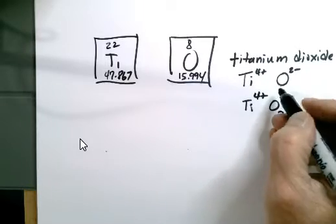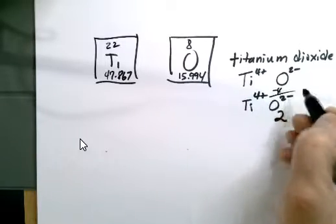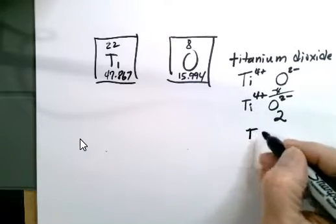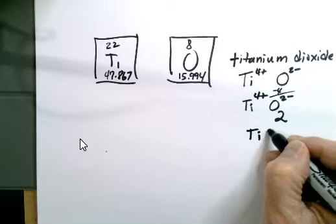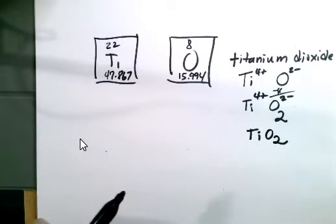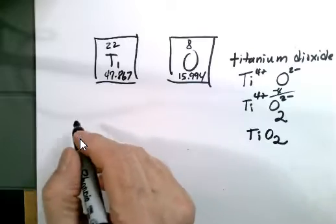2 times negative 2 is negative 4, and that allows us to cancel this and make it neutral. So, TiO2 is the formula that we're going to determine the molar mass for in this video.